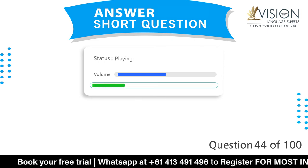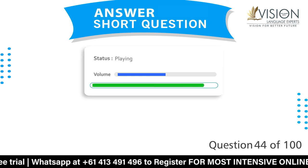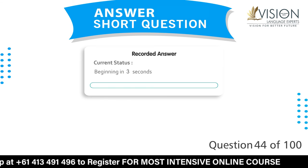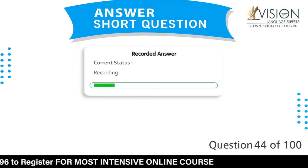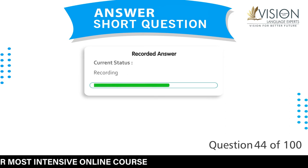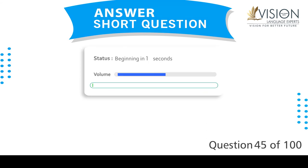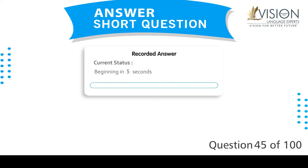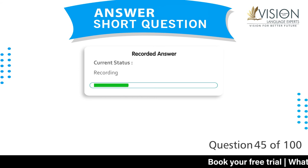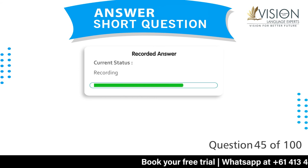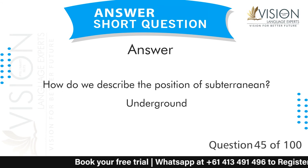What category do bees, butterflies, and mosquitoes belong to? Insects. How do we describe the position of subterranean? Underground.